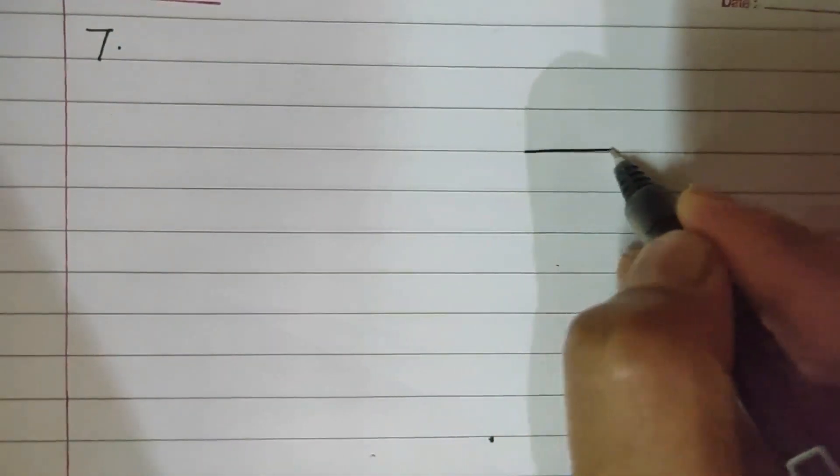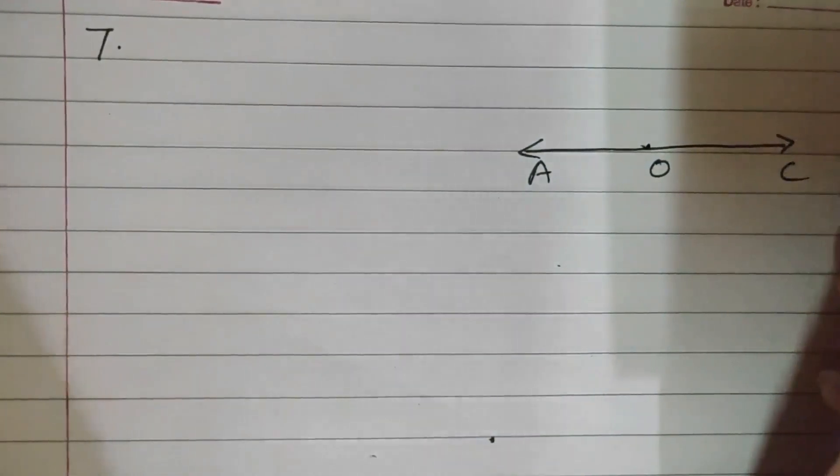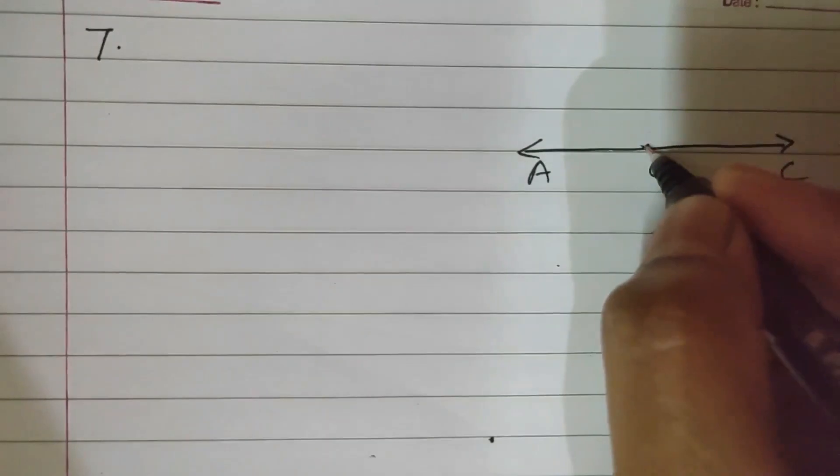Sum number seven: in the given figure, AOC is a straight line.